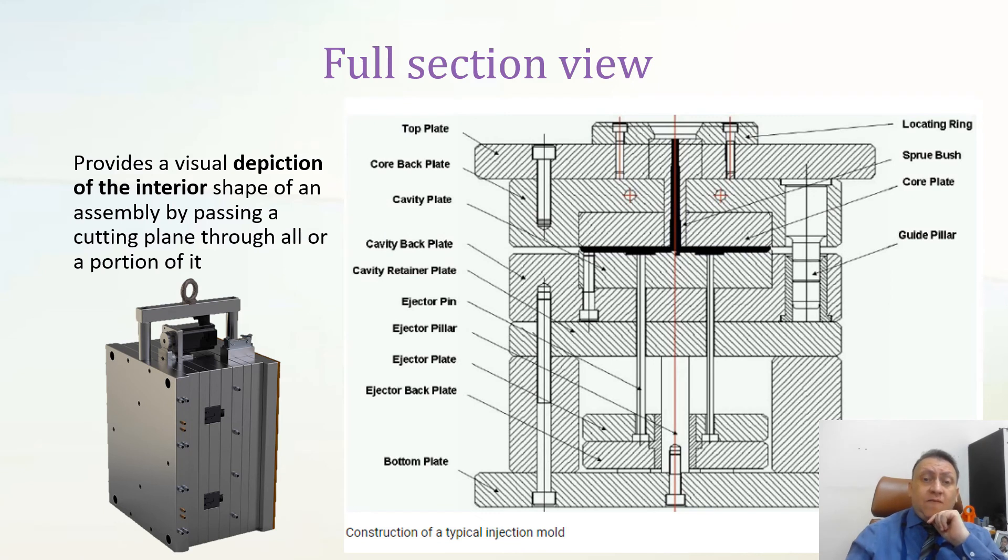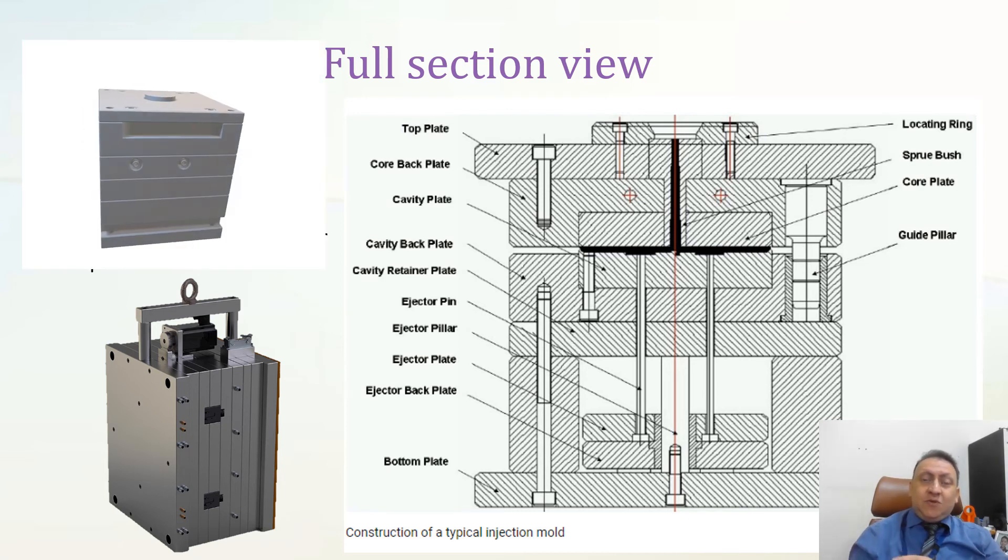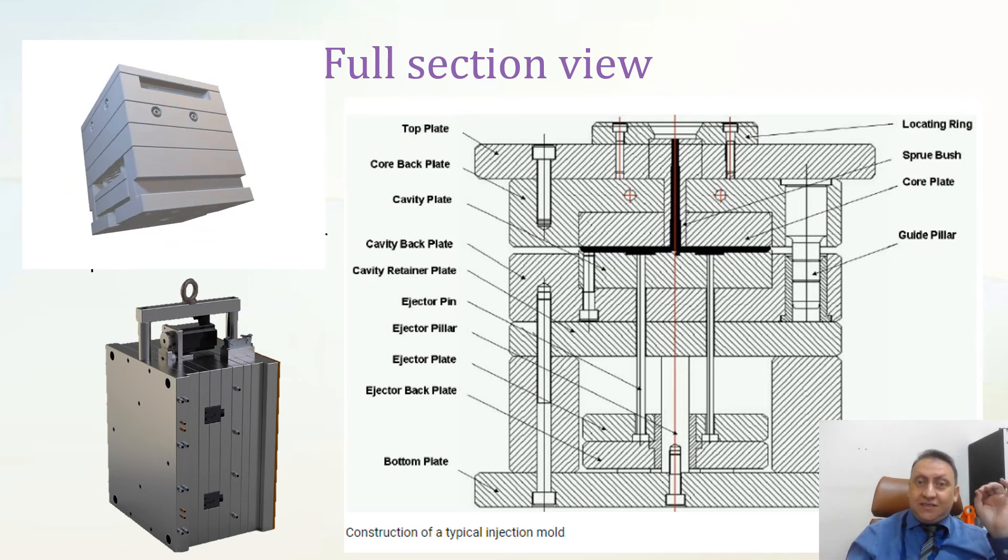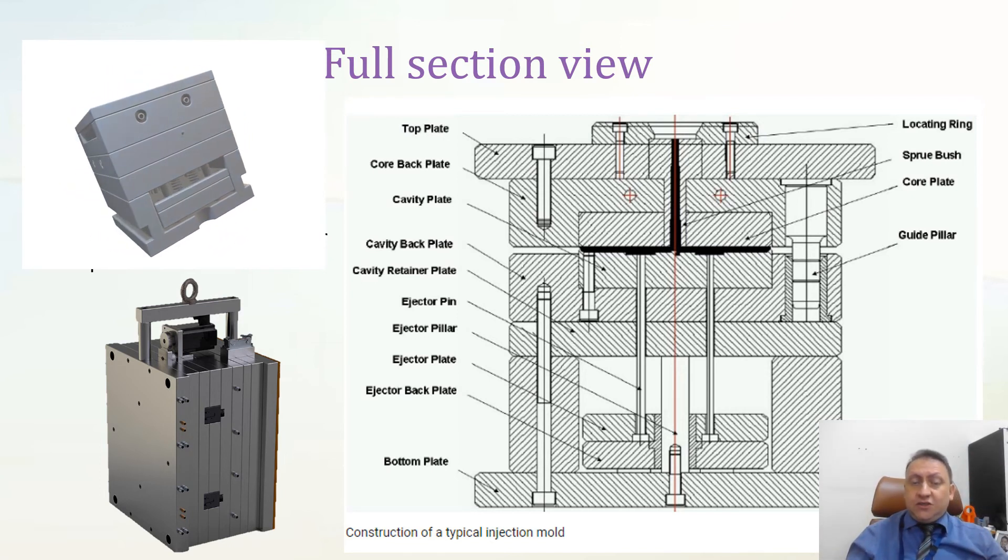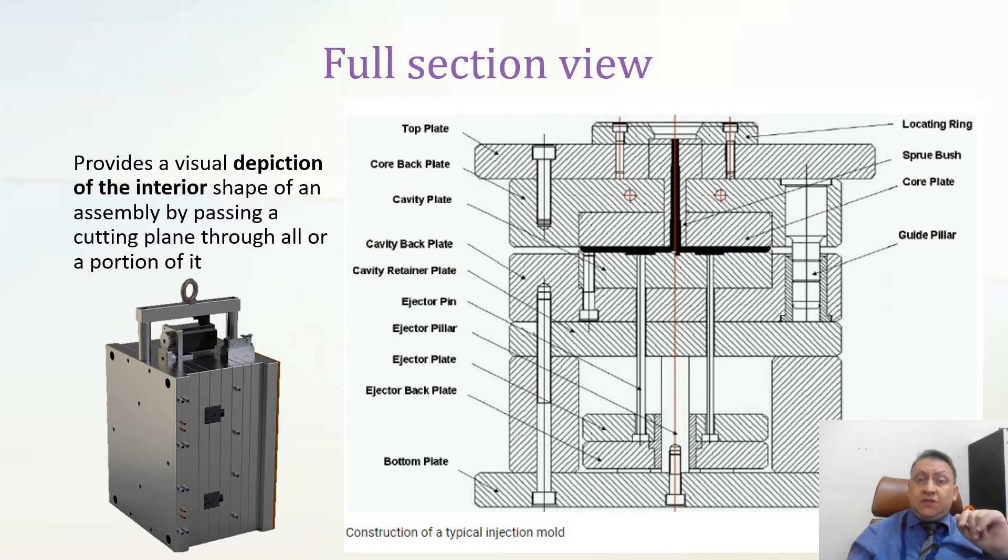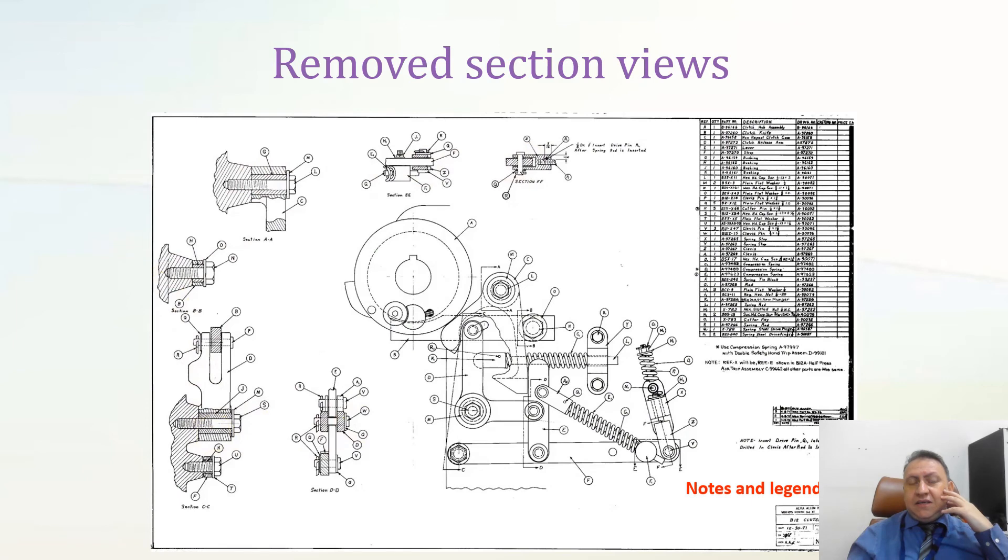Then you might have full section view. Full section view is very useful when you want to see something like injection mold. Injection mold from outside, you cannot clearly see how many cavities we have, how many ejectors, the cooling channel, anything about the mold. You cannot tell. But if you have correct section view with section lines with all the necessary details, you will be able to understand the component of the mold. Clearly.